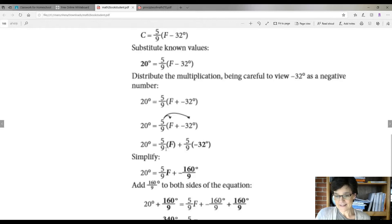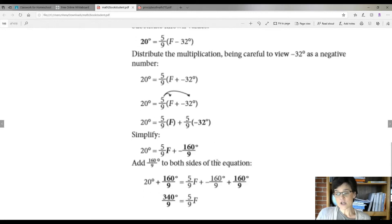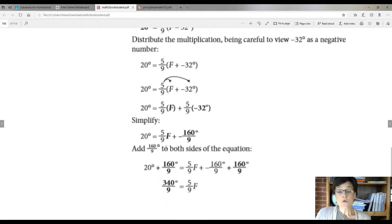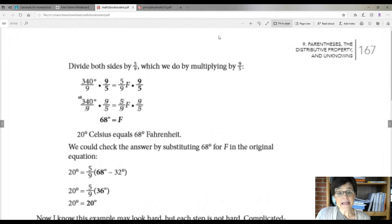Five ninths times F gives you five ninths F plus five ninths times negative 32. Do the calculations and it comes out to be this. So you're left with 20 degrees equals five ninths F plus your negative 160 degrees over nine. So add, you got to do the opposite. So add this to both sides so that these cancel each other out. And you're left with 340 over nine equals five ninths F. Remember we need to get F by itself.